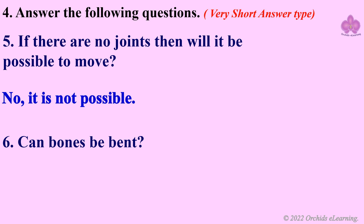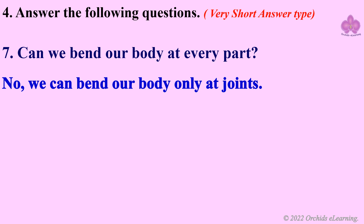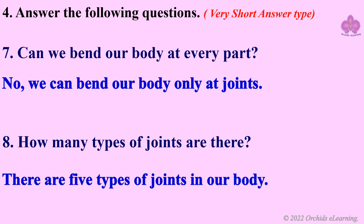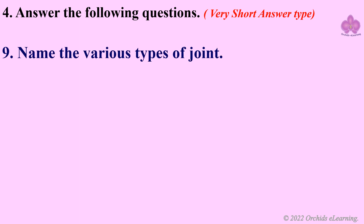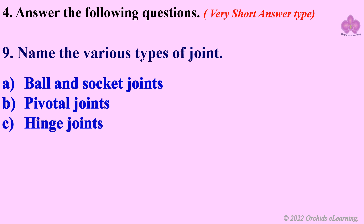Can bones be bent? No, bones cannot be bent. Can we bend our body at every part? No, we can bend our body only at joints. How many types of joints are there? There are five types of joints in our body: ball and socket joints, pivotal joints, hinge joints, fixed joints, and gliding joints.